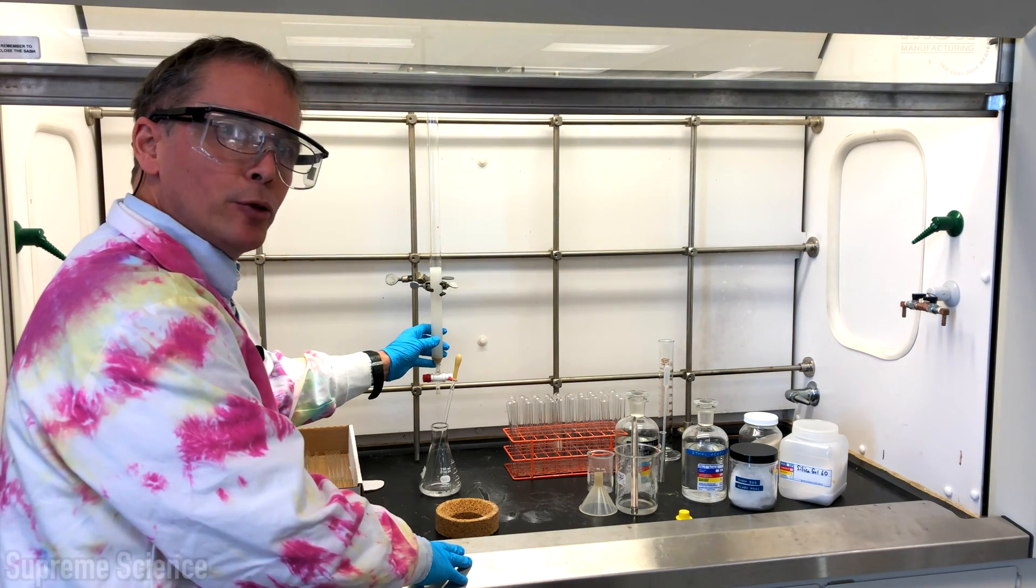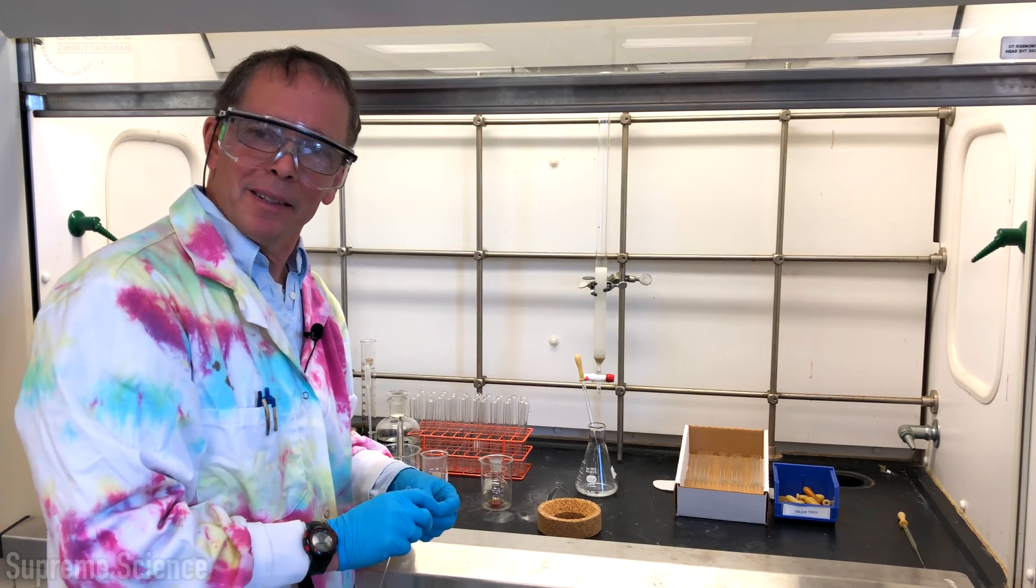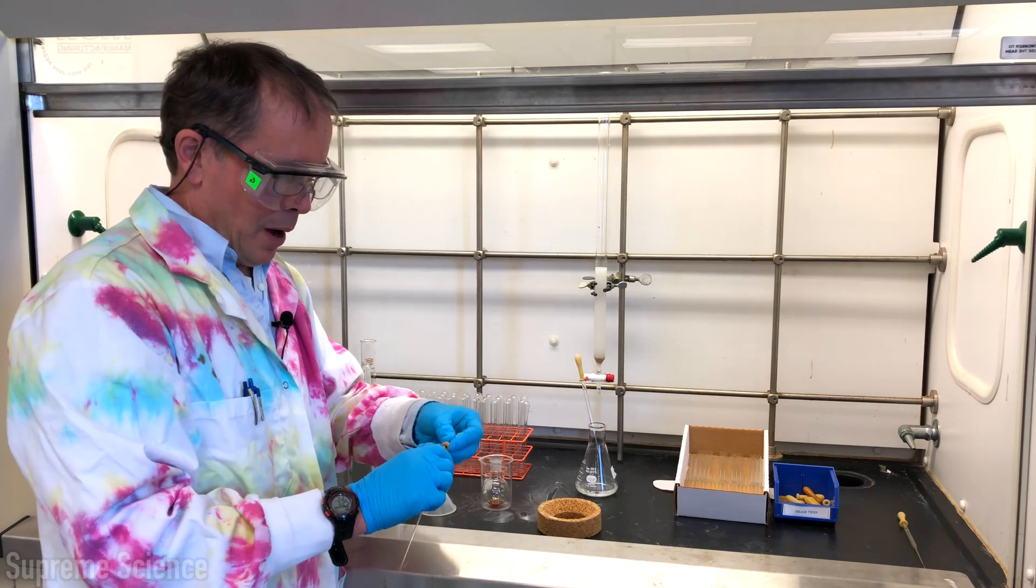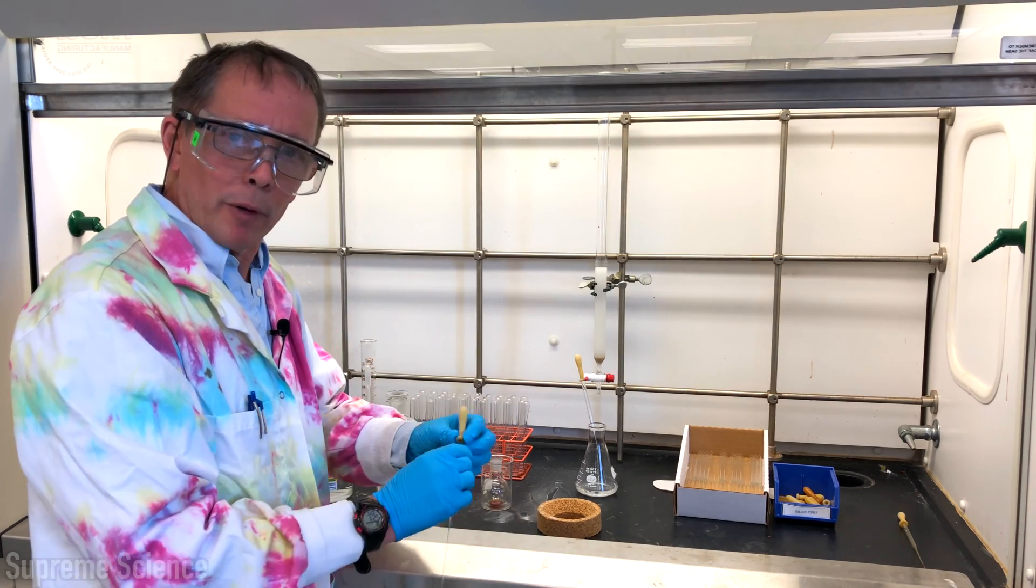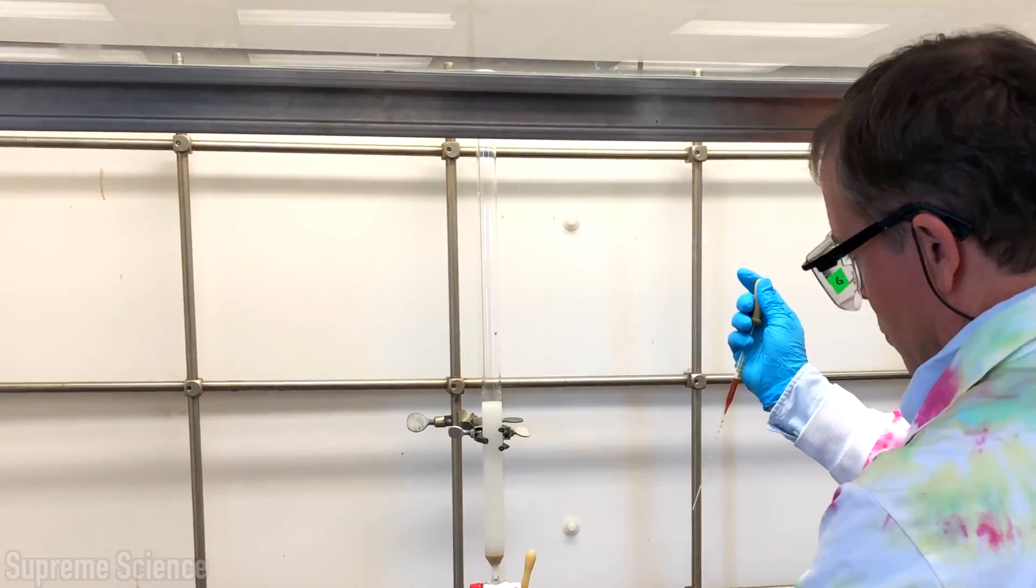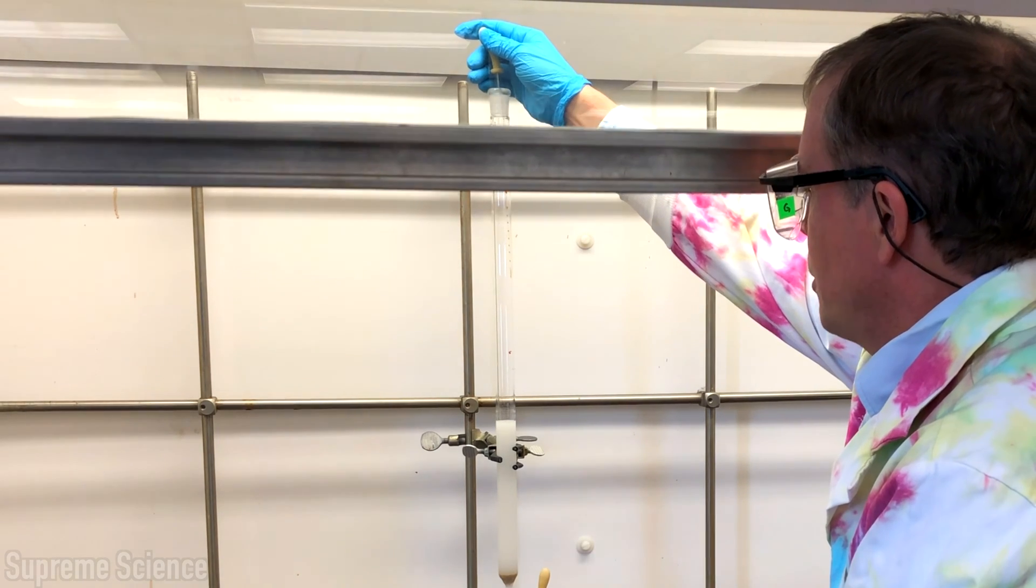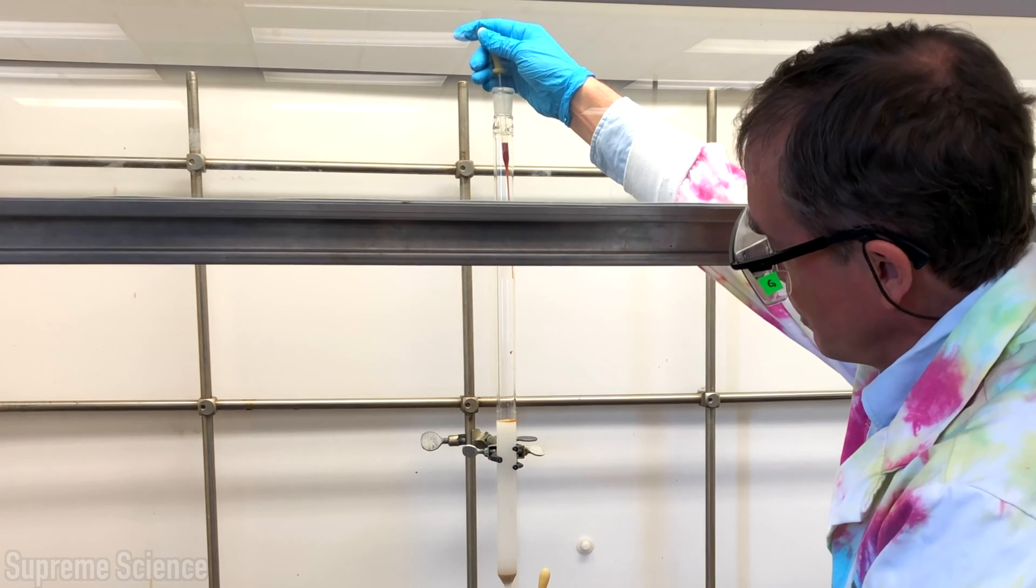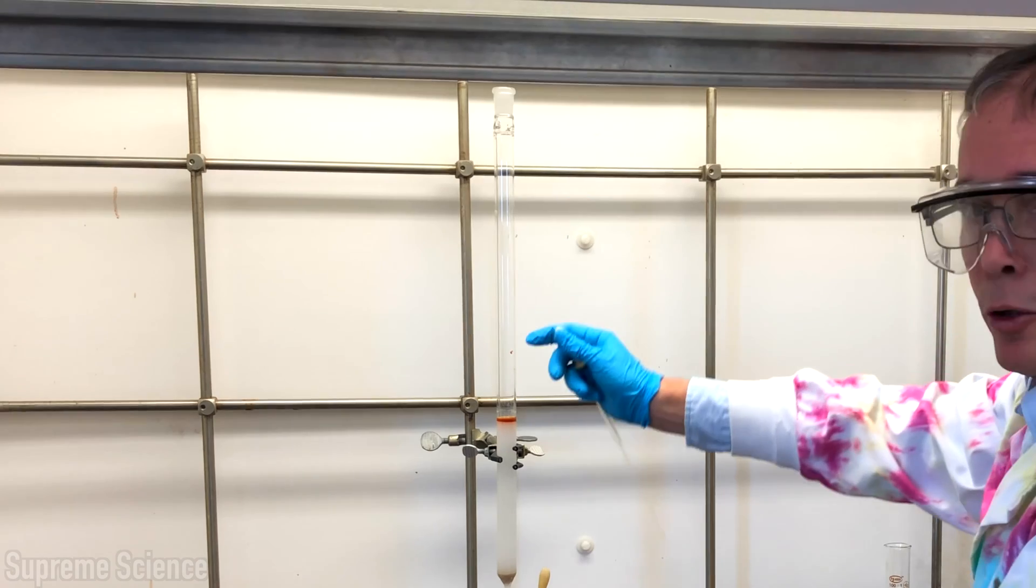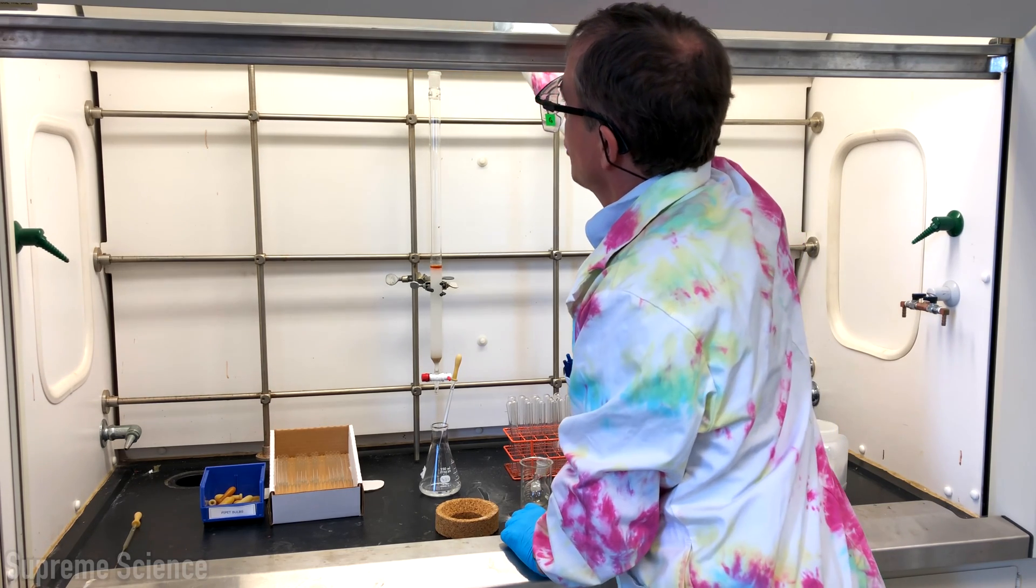Now we're going to load our mixture of chemicals to be separated onto the top of the column. Preparing a pipette as described in our video over here, I will now pipette our reaction mixture onto the top of the column. I'm going to put the pipette as far down into the column as possible and let the compound drip down the side of the column just in one place and it's now at the top of the column.